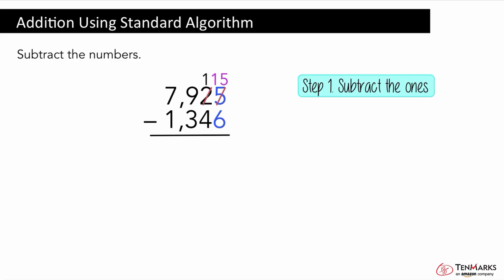Now we can take away six ones from fifteen ones. Fifteen minus six equals nine so there are nine ones.